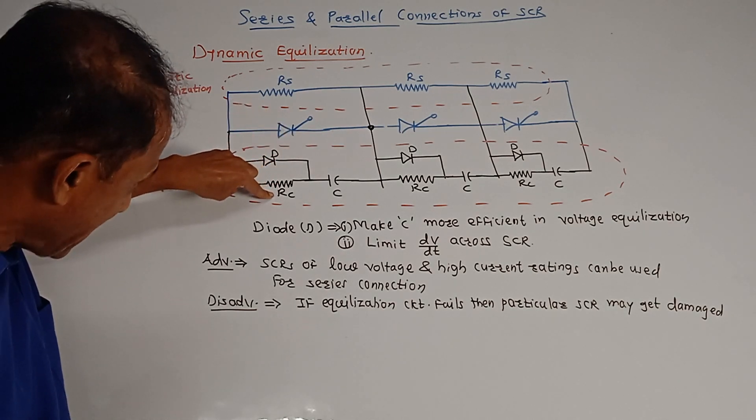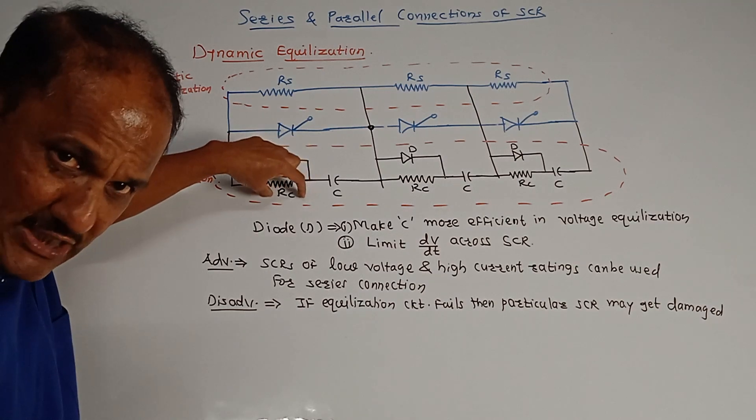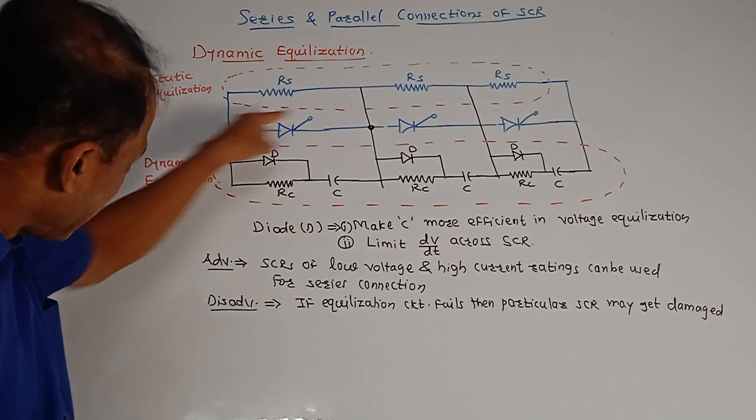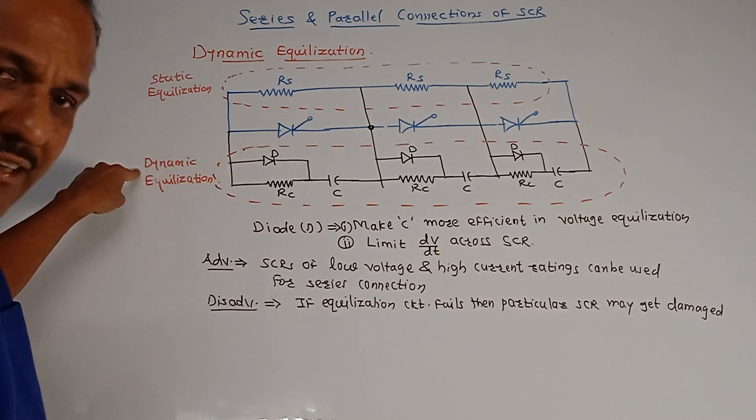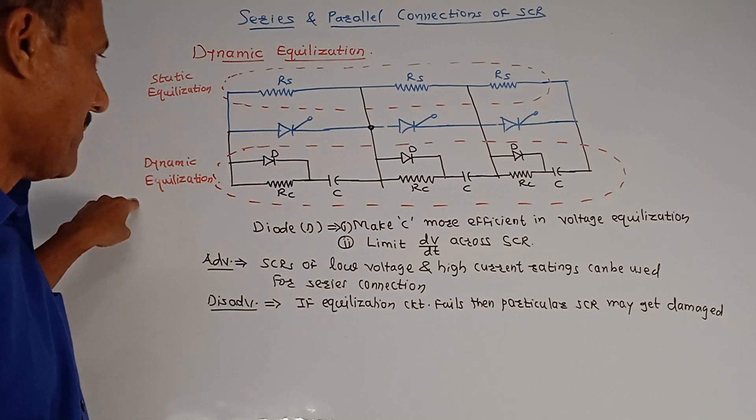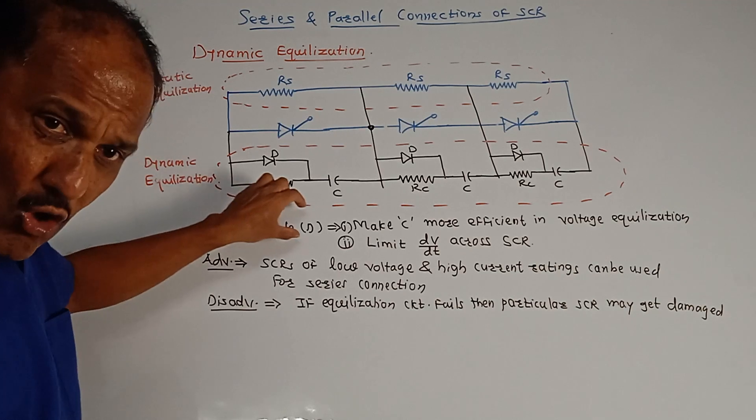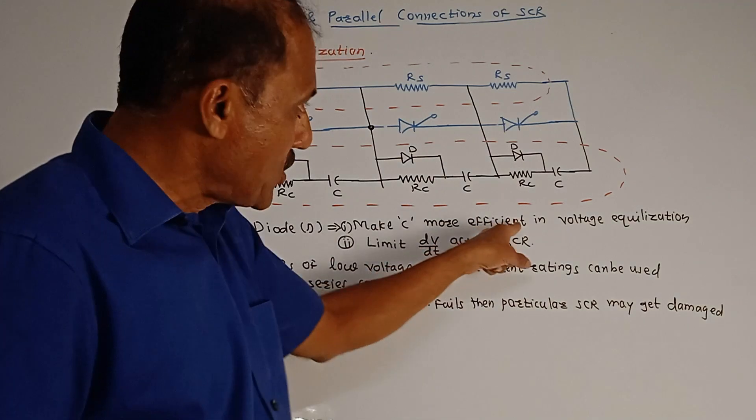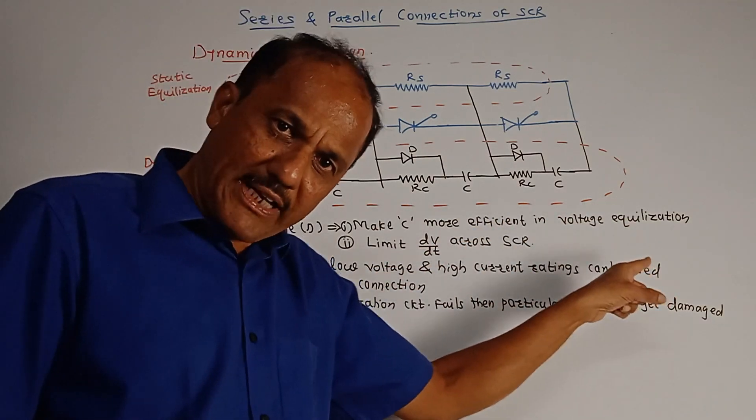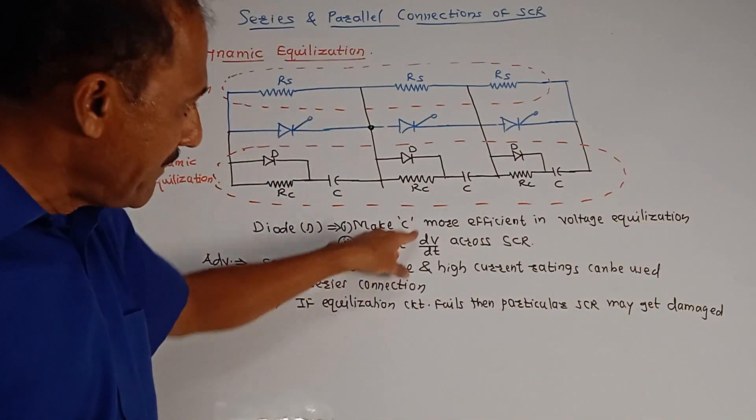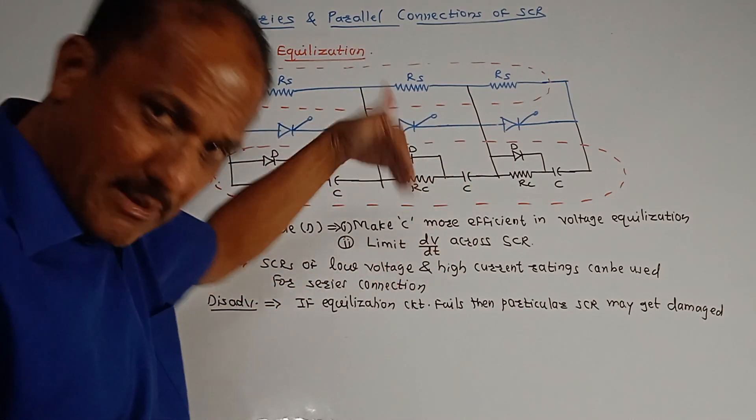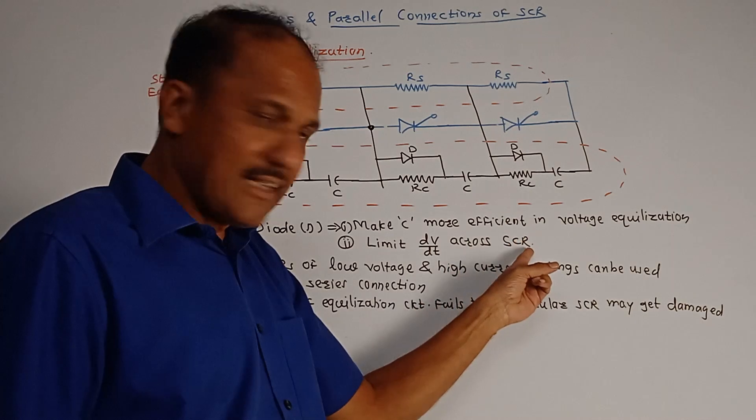So this combination, basically RC, that is the resistance, then capacitor, and the diode, this combination gives us the dynamic equalization circuit. In this case, the role of diode is: it makes capacitor C more efficient in case of voltage equalization, and second is it limits dV/dt, that means variation of voltage. It will limit the variation of voltage which is taking place across SCR.